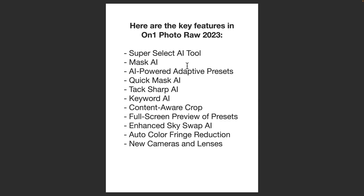Super Select AI is a great tool. With it, you can select various parts of an image. For example, if you have a scene with a road, you could select the road and do editing on it. You could select the sky, the subject, a tree, or grass. ON1 Photo Raw examines the scene, determines what elements are in it, and with Super Select AI you can select those various elements and edit them independently of one another.